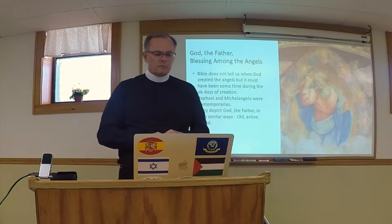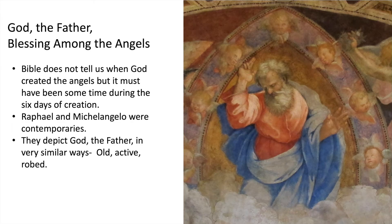Let's take a closer look at the picture of God. The Bible never tells us exactly when the angels were created, but we know it had to be between the first day of creation and the sixth day of creation, because Genesis 1:1 says in the beginning God created everything that exists, and at the end of Genesis chapter 1 it says God had finished all he had done creating. So sometime in those six days of creation, God created the angels. Raphael and Michelangelo were contemporaries and have many similarities in how they depict God: dressed in red and blue robes, bearded, old, in the clouds. A very common theme. They each had their own special style, but you can tell they come from the same place and the same era.